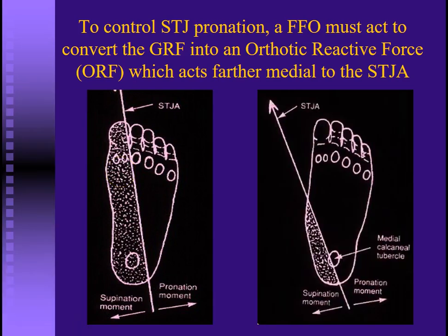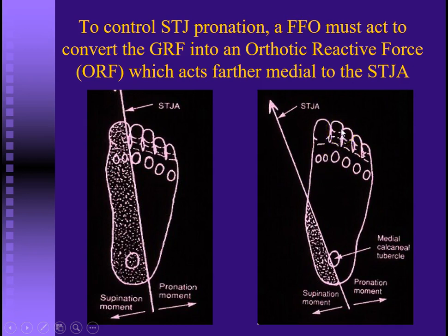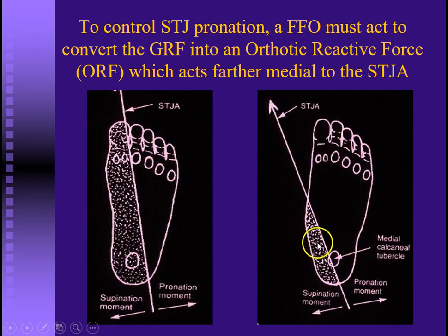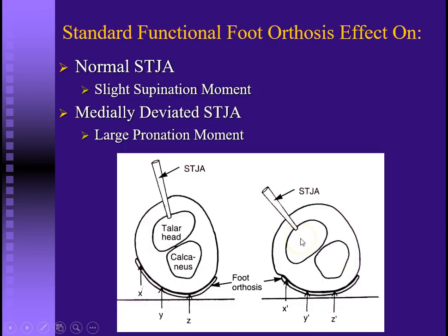Now let's look at that pes planus foot type. The foot is flattened, the leg has internally rotated, so the tibia and the talus have internally rotated, and with the talus goes the axis. Now we have a much smaller area where force can be applied to create a supination moment.